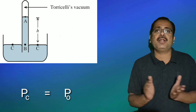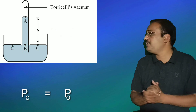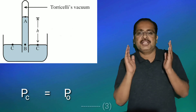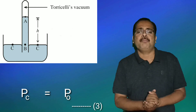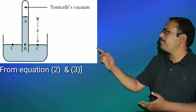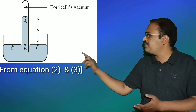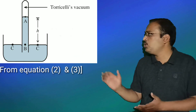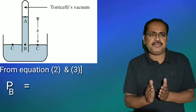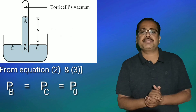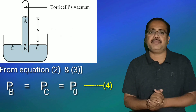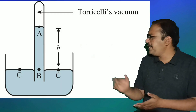Therefore PC = P0, which is equation number 3. From equations 2 and 3, we get PB = PC = P0. This is equation number 4.